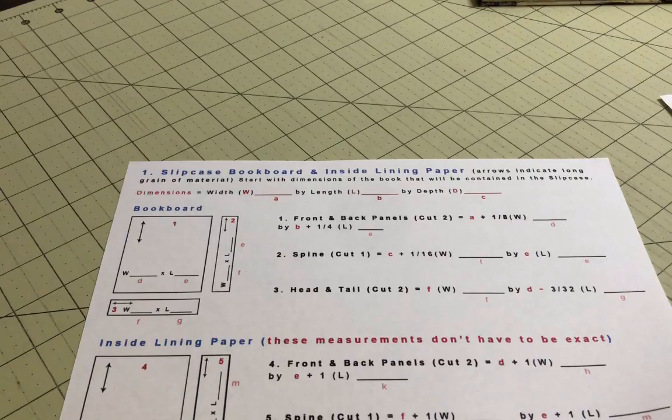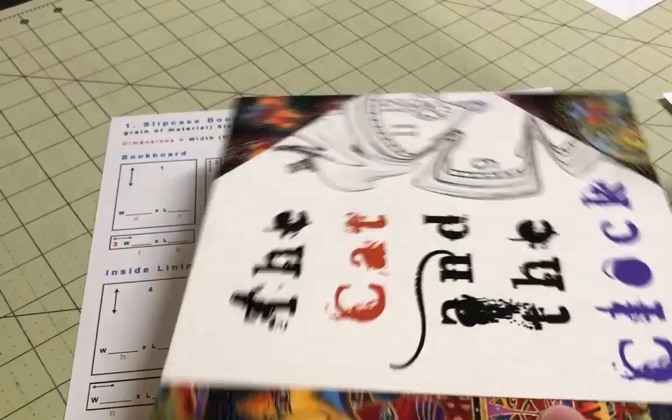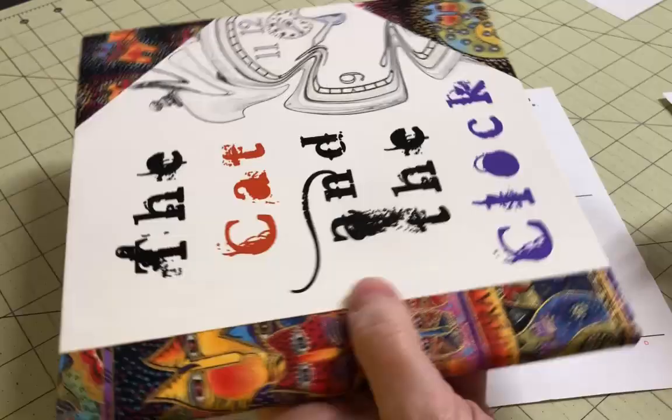Start with worksheet number one, the bookboard and inside lining paper. The first thing you need to do is take the measurements of the book that you're going to put in the slipcase. These measurements need to be as accurate as possible for the finished slipcase to be successful.